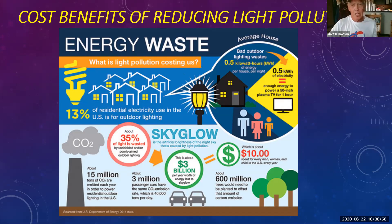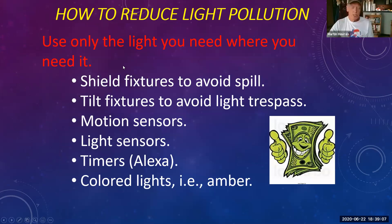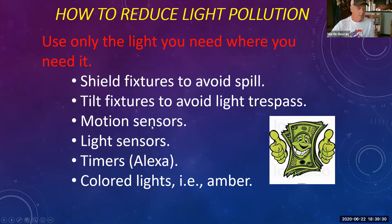How can we reduce light pollution? One key is to use only the light that you need, where you need it. Ways to do that: shield fixtures to avoid light spill; direct or tilt fixtures to keep light on your property; use motion sensors so outdoor light only comes on when motion is detected; or light sensors where lights come on at sunset and go off automatically at dawn.